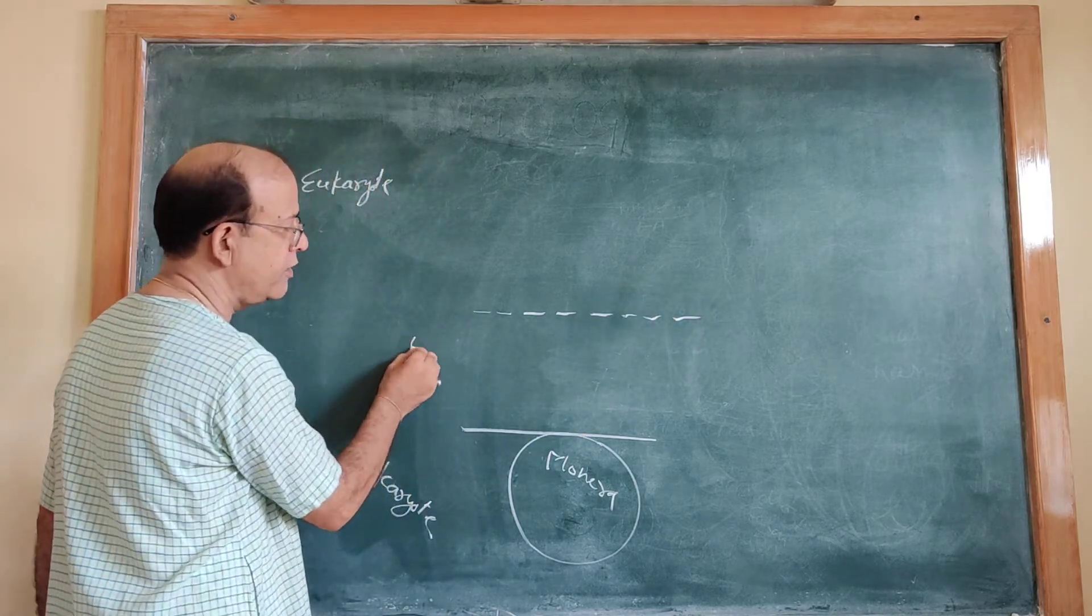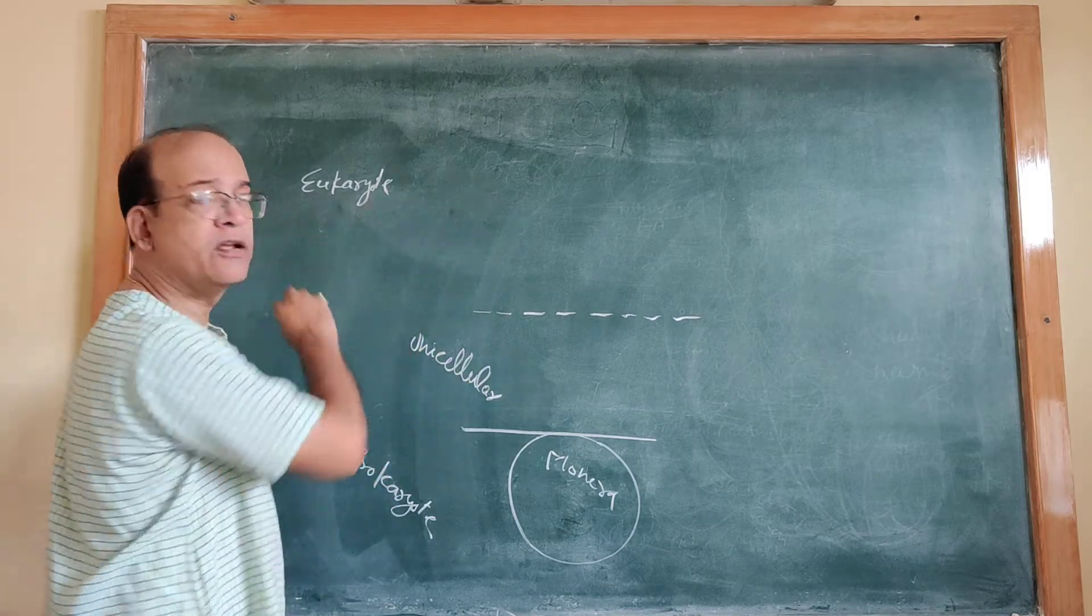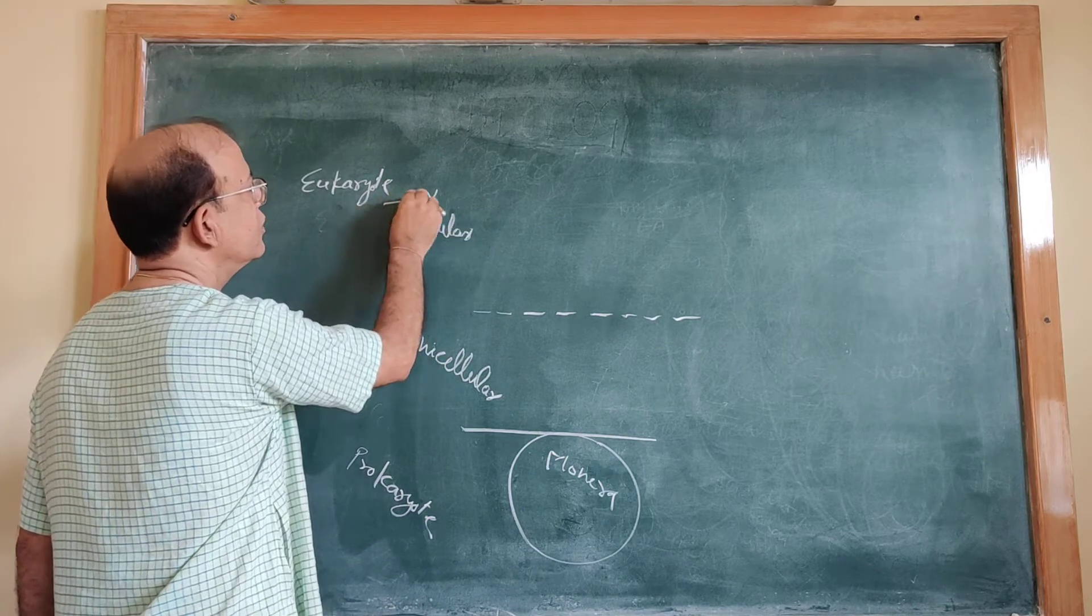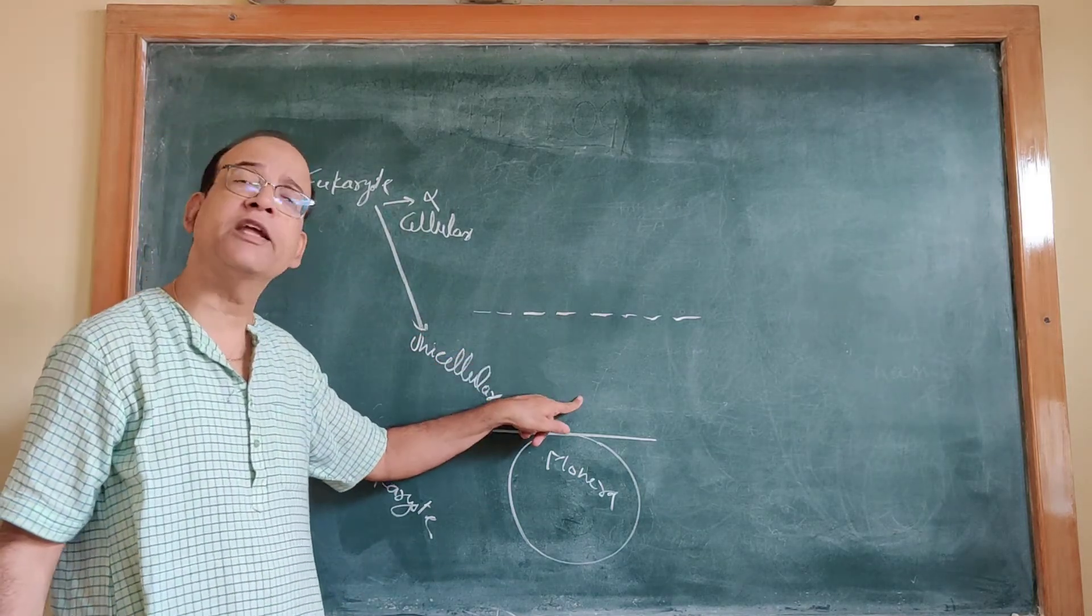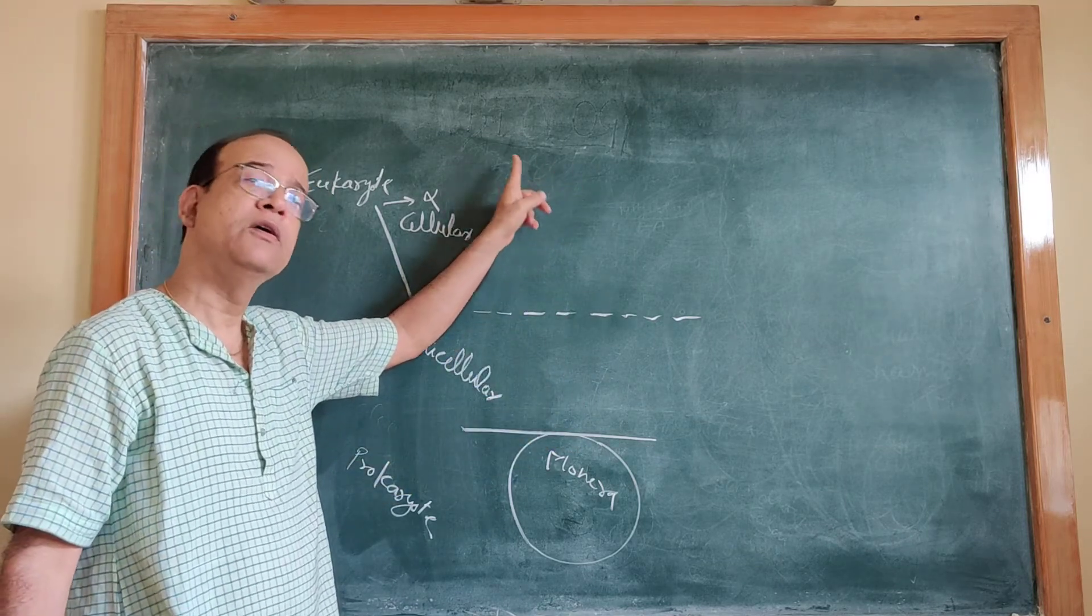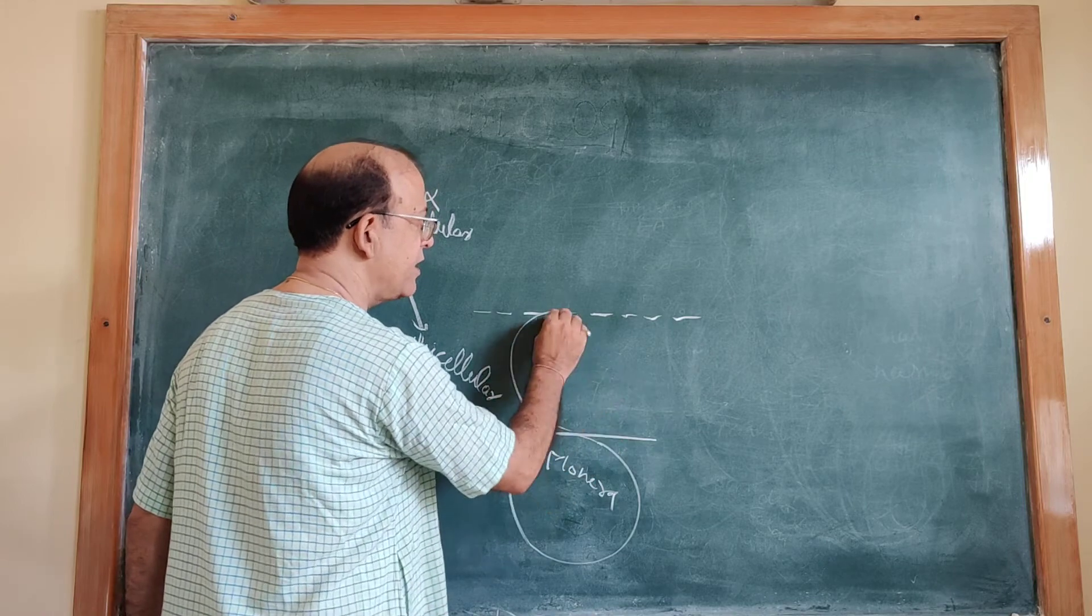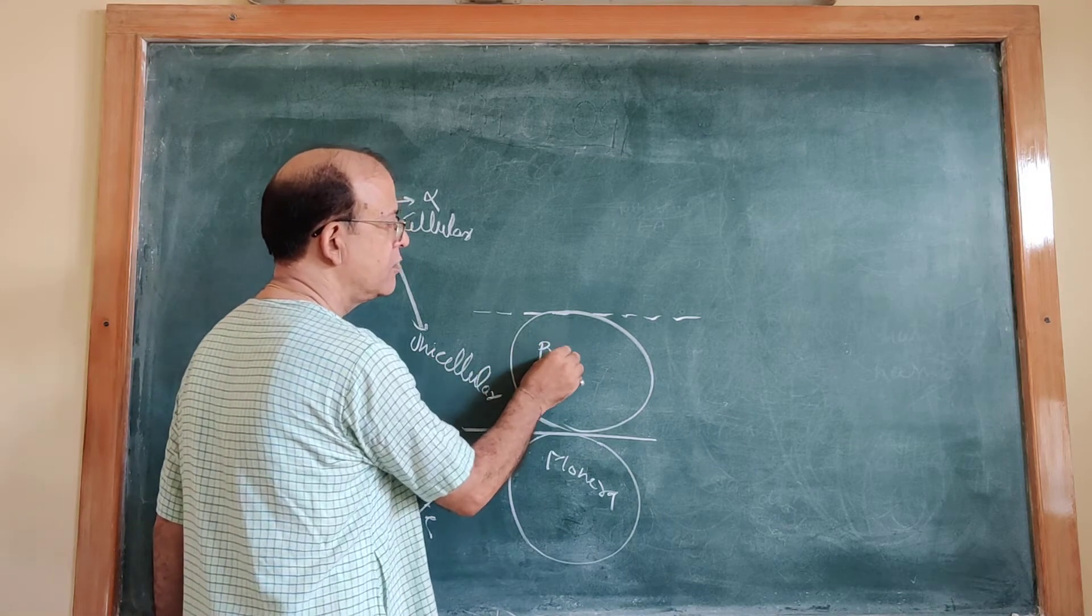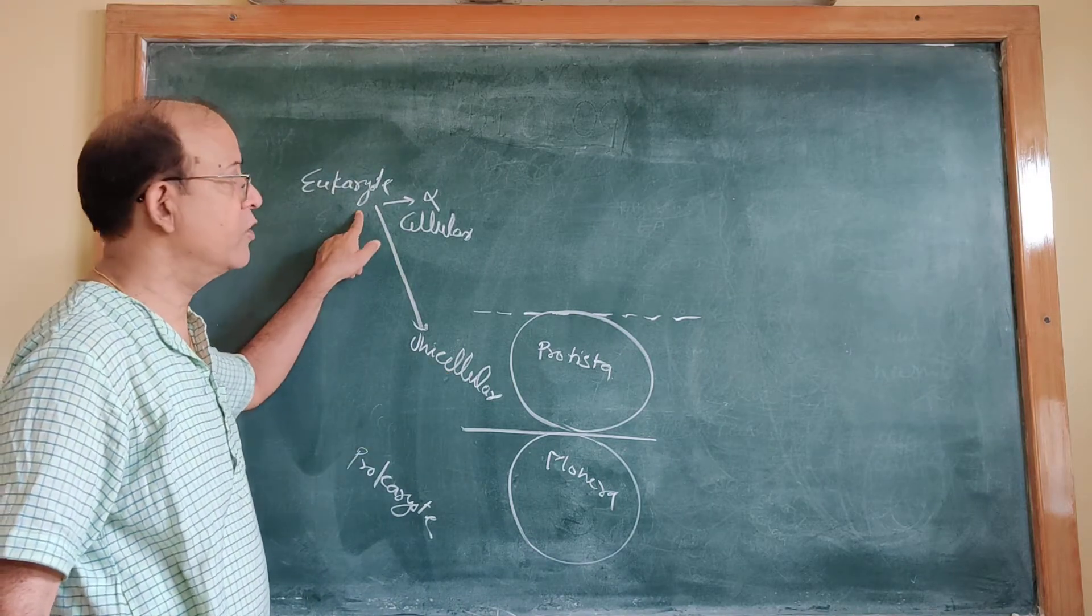You can classify again. You make another line of division, and here you call all unicellular, and here you call all multicellular. You carry out unicellular organisms on one side, and this group becomes Kingdom Protesta.